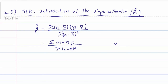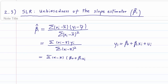Now, we know that yi equals beta 0 — the real beta 0 — plus beta 1 — the real beta 1 — times xi, plus ui. So we can rewrite the formula for beta 1 hat as the sum of (xi minus x bar) times (beta 0 plus beta 1 times xi plus ui).